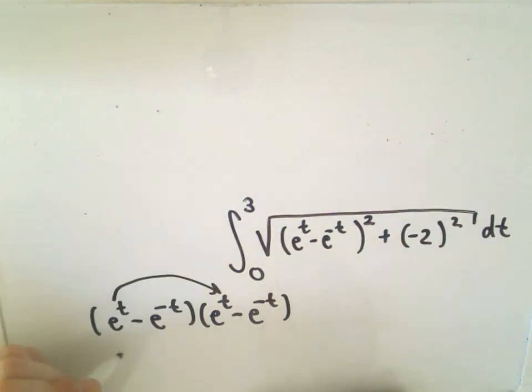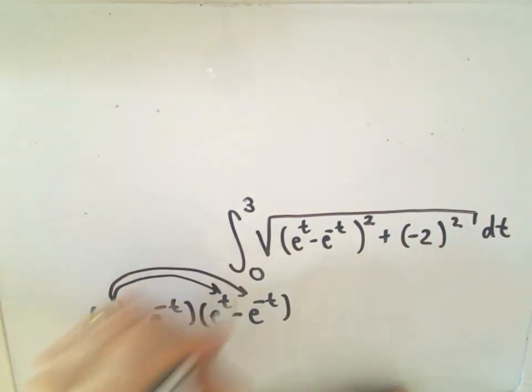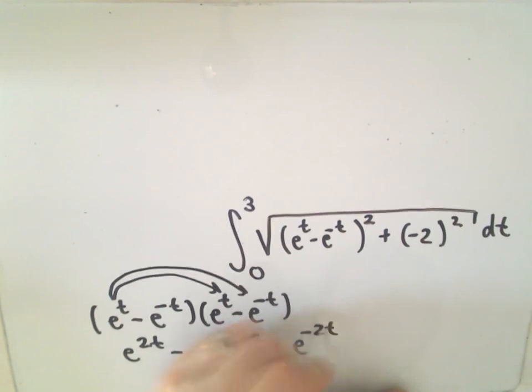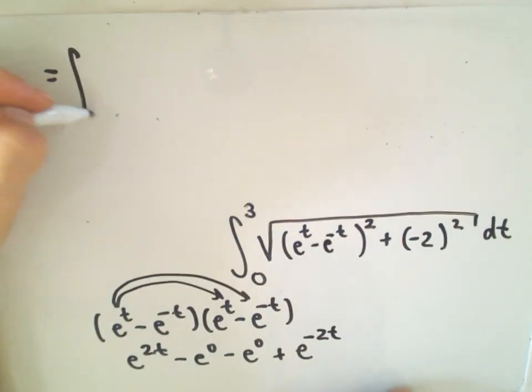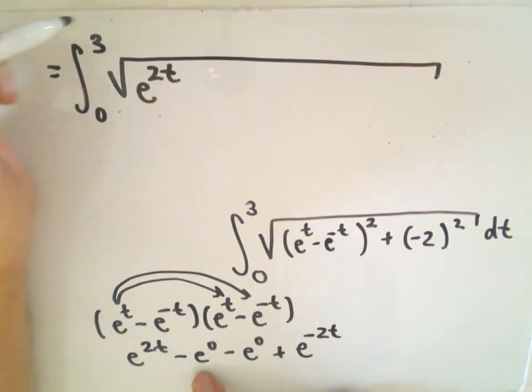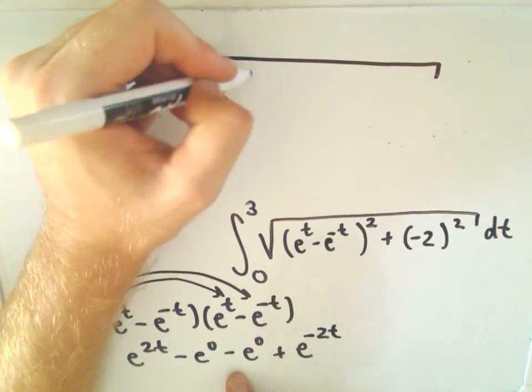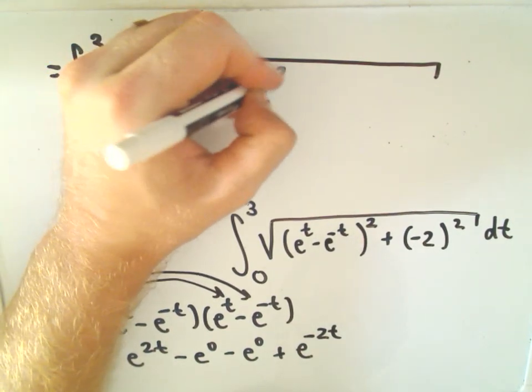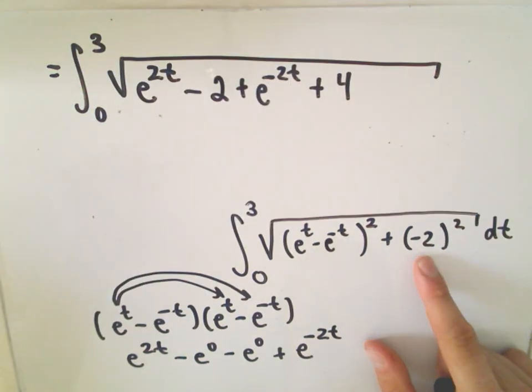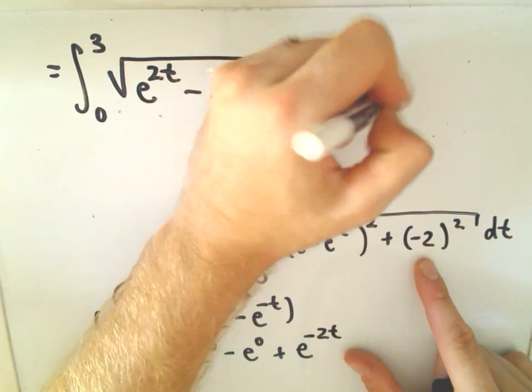Okay, so e to the t times e to the t is going to be e to the 2t. e to the t times negative e to the negative t is going to be negative e to the zero. That's what we're going to get on the inside. Then on the outside, we'll get a positive e to the negative 2t. So, underneath my radical, I'm going to have e to the 2t. Well, e to the zero, again, is 1. So we have minus 1, minus 1, or minus 2, plus e to the negative 2t. And then we have to tack on our negative 2 squared, which is going to give us positive 4. And again, we're integrating all that with respect to t.